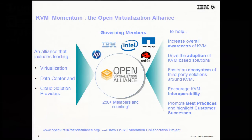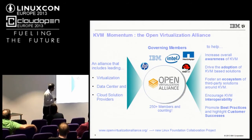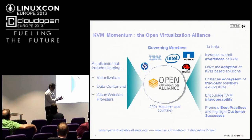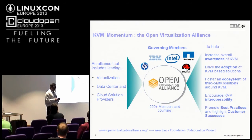The Open Virtualization Alliance was announced on the first day of this conference as a new Linux Foundation collaboration project. Its objective is to increase overall awareness of KVM, bring developers and consumers together, foster an ecosystem, and encourage interoperability. It has 250 members and counting. The five governing members are HP, IBM, Intel, Red Hat, and Adapt, which recently became a governing member. So there's a lot of focus from many organizations to really make a push here.